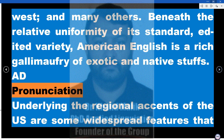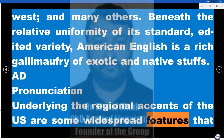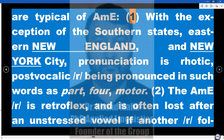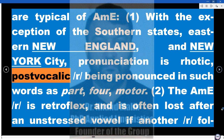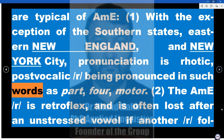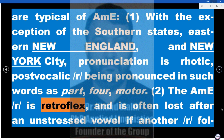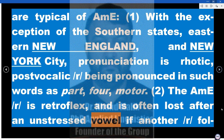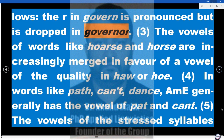Pronunciation. Underlying the regional accents of the US are some widespread features typical of AME. 1. With the exception of the southern states, eastern New England, and New York City, pronunciation is rhotic — post-vocalic R being pronounced in such words as 'part,' 'for,' 'motor.' 2. The AME R is retroflex, and is often lost after an unstressed vowel if another R follows: the R in 'govern' is pronounced, but is dropped in 'governor.'